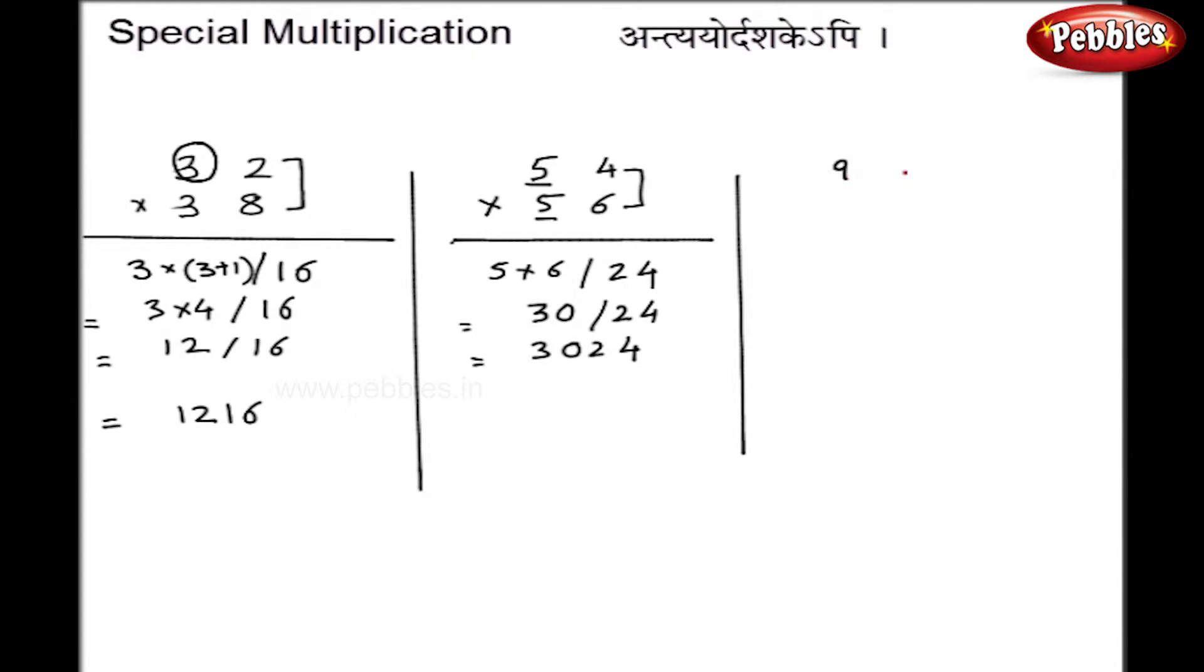One more example: 92 multiplied by 98. I will directly write down the answer: 8 into 2 is 16, and here I have to do 9 into 10, that is 90, and 16 on the right hand side. Final answer is 9016.